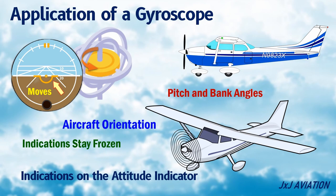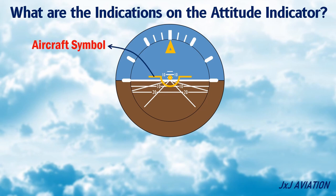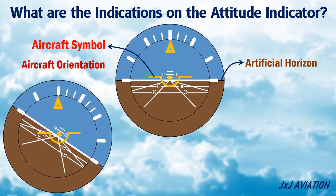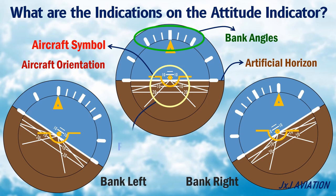So let's look at the indications on this instrument. This is the aircraft symbol and it shows the orientation of the aircraft, and this is the artificial horizon. This means the aircraft is banking towards the left and this means the aircraft is banking towards the right. These markings represent the bank angles of the aircraft, and these markings represent the pitch up or pitch down angles.